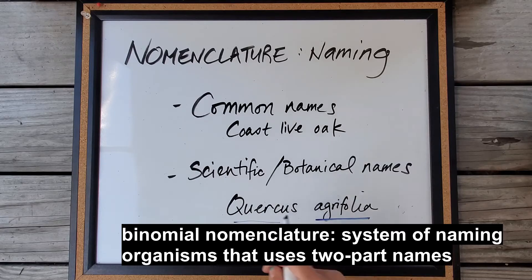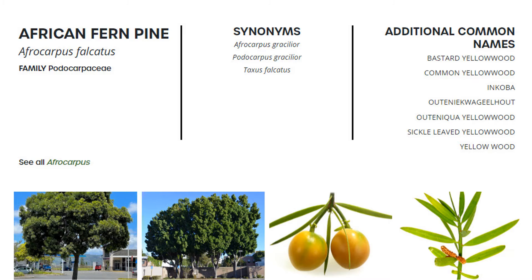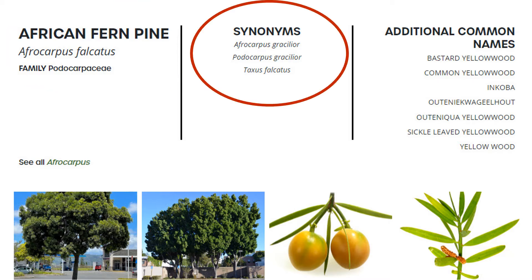This specific system of naming is called binomial nomenclature — there are two parts to the name, kind of like having a first name and a last name. All species have only one active scientific name. They may have some old names that are no longer in use because they were reclassified when it was discovered they're more closely related to another species or genus than expected. So you'll find these listed as synonyms.